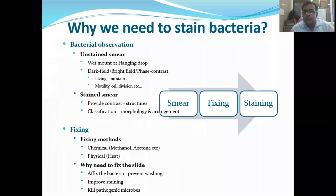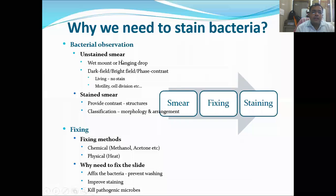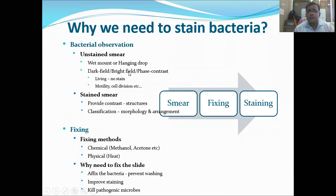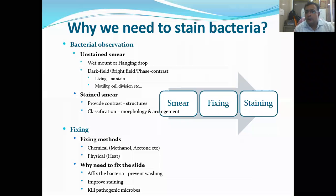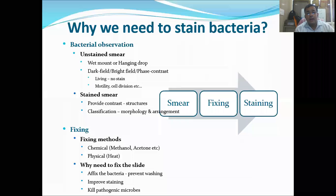Now, why do we need to stain bacteria? Even without staining we can observe using an unstained smear — for example, a wet mount or hanging drop method where a drop of culture is placed for observation. However, unstained smears require special microscopes like dark field, bright field, or phase contrast, and are generally used to observe living organisms and processes like motility or cell division.